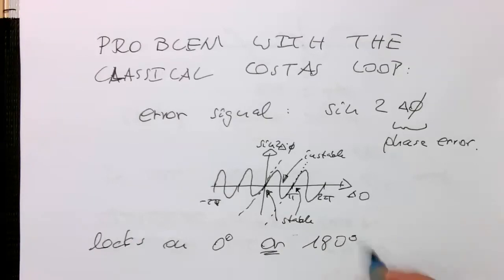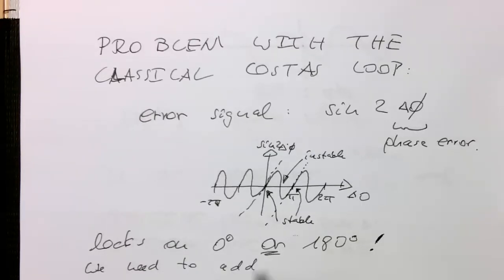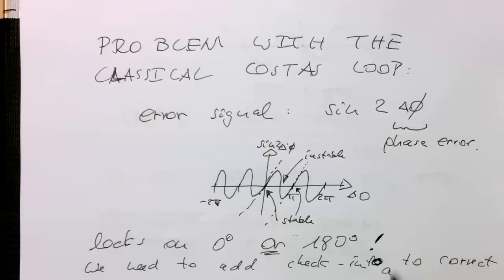And there's no way of preventing that with the standard Costas loop. So therefore, if we are receiving a data stream, we need to check if the whole stream might be just completely inverted. So we need to add check information into the data stream to correct an inversion.